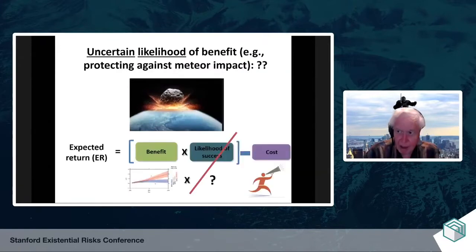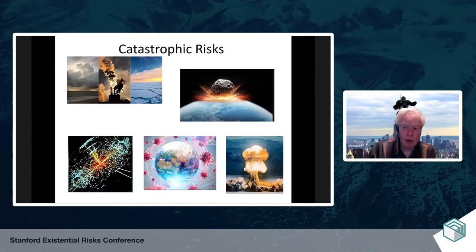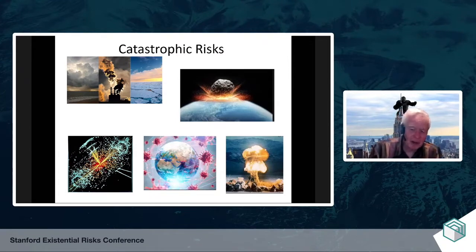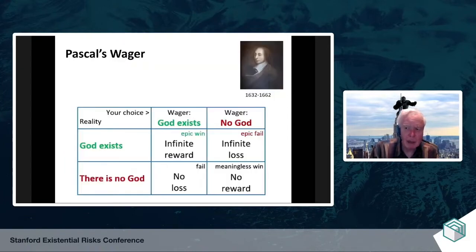What about when the likelihood of benefits is simply uncertain or unknown? Uncertainty is a concept that the economist Frank Knight brought into the conversation. Risk means you know what it is; uncertainty means you just don't know. You can't use the expected return approach because that requires knowing the likelihood of success. And many catastrophic or existential risks fit that — for example, what's the likelihood of a meteor hitting, or anything you do preventing a meteor from hitting? Richard Posner, the judge, was very concerned that super colliders would create a black hole that would envelop the universe — a low, perhaps almost zero probability, but definitely a catastrophic existential risk.